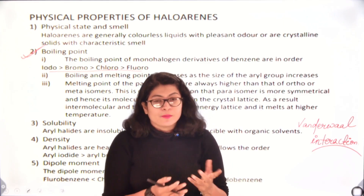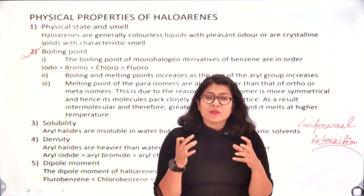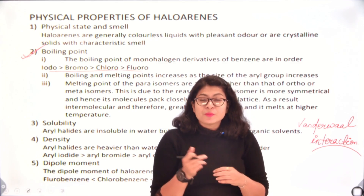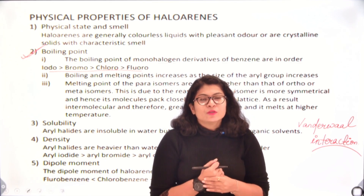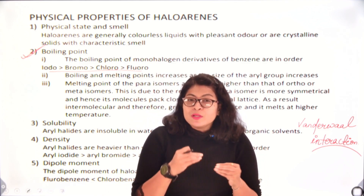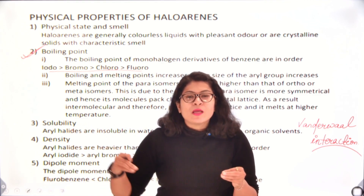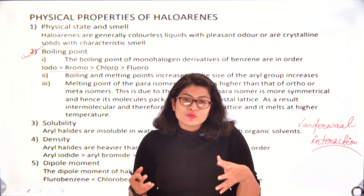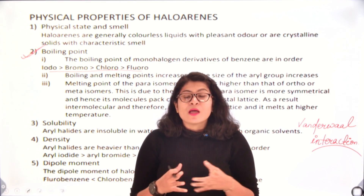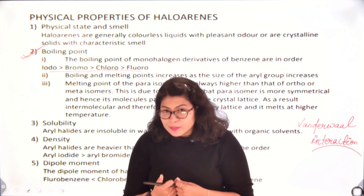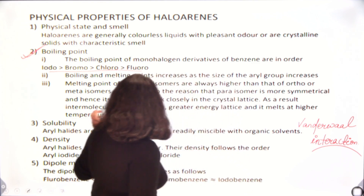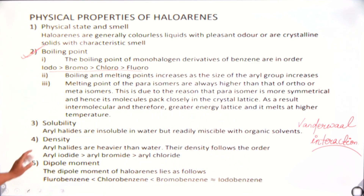In case of fluorine, due to its very small size, the van der Waals force of attraction or London dispersion forces are very weak. So they can be easily separated and hence their boiling points are low. But gradually as we move from fluorine to iodine, the size of the halogens goes on increasing, so the van der Waals interaction increases and their boiling point gradually increases.